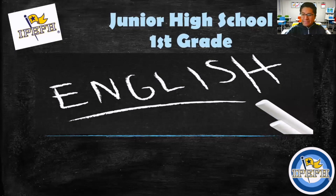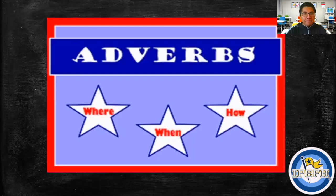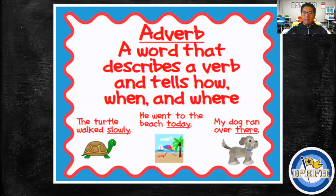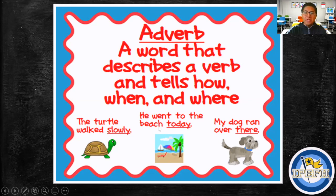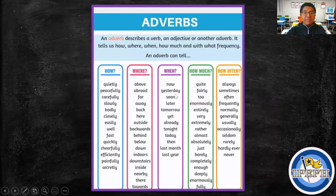Let's start with the definition of an adverb. What is an adverb? Well, an adverb is a word that describes a verb and tells how, when, and where. For example: 'The turtle walked slowly,' 'He went to the beach today,' 'My dog ran over there.' An adverb describes a verb.